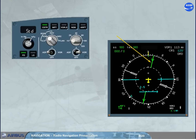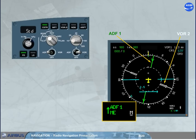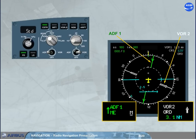ADFs are shown as green pointers — here, ADF1. VORs are white pointers — in this example, VOR2. Note also that receiver 1 data is displayed on the left side of the ND and receiver 2 data on the right side. The associated navaid data is displayed at the bottom of the ND in their respective colors and sides.